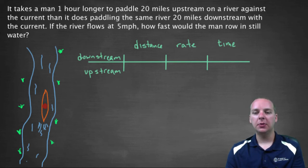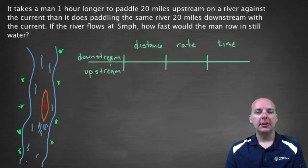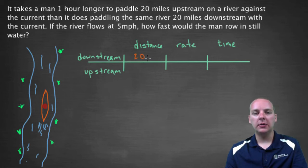So let's take a look at what we know here. Alright, so let's see what we can decipher from this. So let's see, distance, well that's easy. Distance downstream is 20 miles, and the distance upstream is the same, 20 miles.